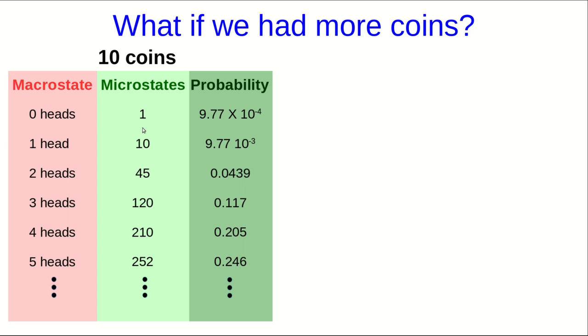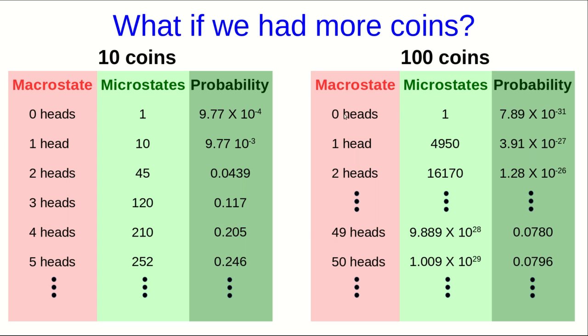What about 100 coins? Well, now the probability of zero heads is absolutely minuscule. That is so tiny that you could flip 100 coins every second for your whole life, and it would be extraordinarily unlikely that you would ever get zero heads. You're most likely to get somewhere between about 30 and 60 heads. So these probability distributions get more and more peaked in the middle as the number of coins increases. And that's the main point I want you to carry away from this.